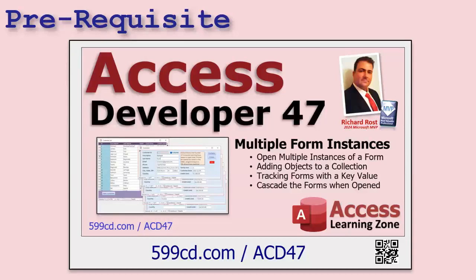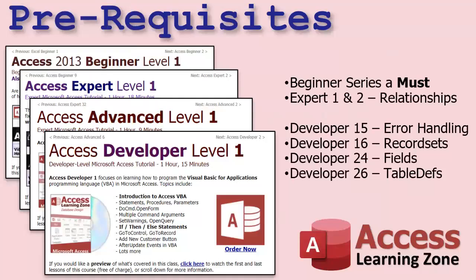This class follows Access Developer 47. I strongly recommend you take all my classes in order — not because I'm trying to sell more lessons, but because they really are designed to follow one after the other. Key prerequisites include the beginner, expert, advanced, and developer series; intro to VBA; Developer 15 for error handling, which we'll use a lot today; Developer 16 for record sets; Developer 24 for the fields collection, which we'll be using today; and Developer 26 for table defs.